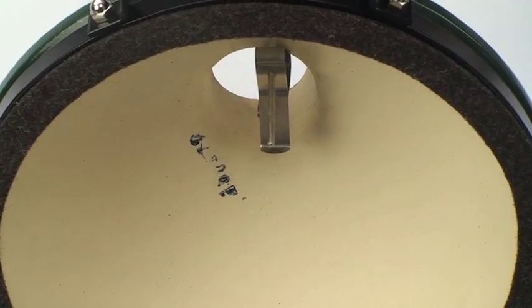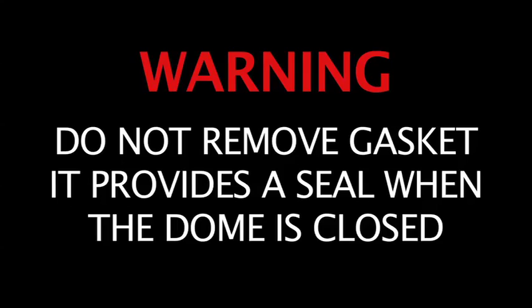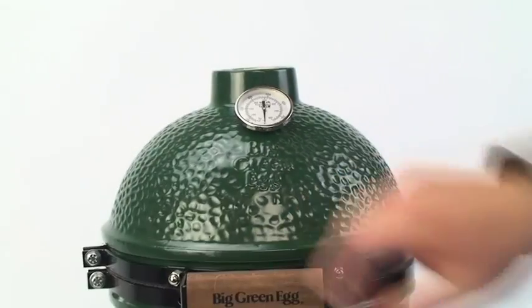Again, notice the gray felt gasket around the rim and the base of the dome. Do not remove this gasket as it provides a seal when the dome is closed. Now grasp the handle of the dome and slowly lower it.